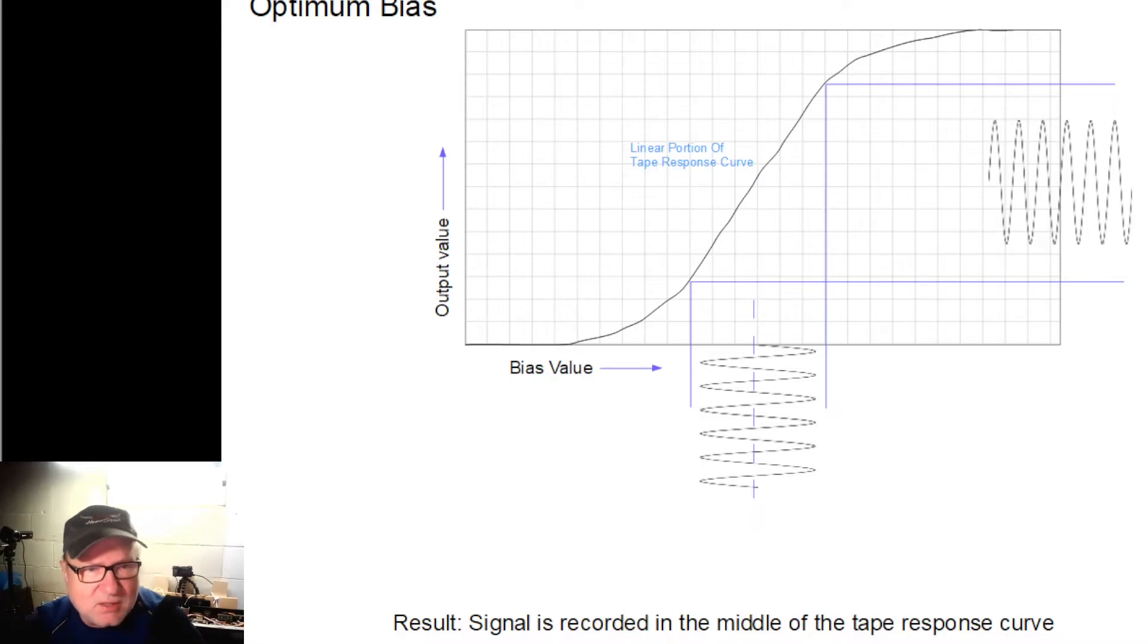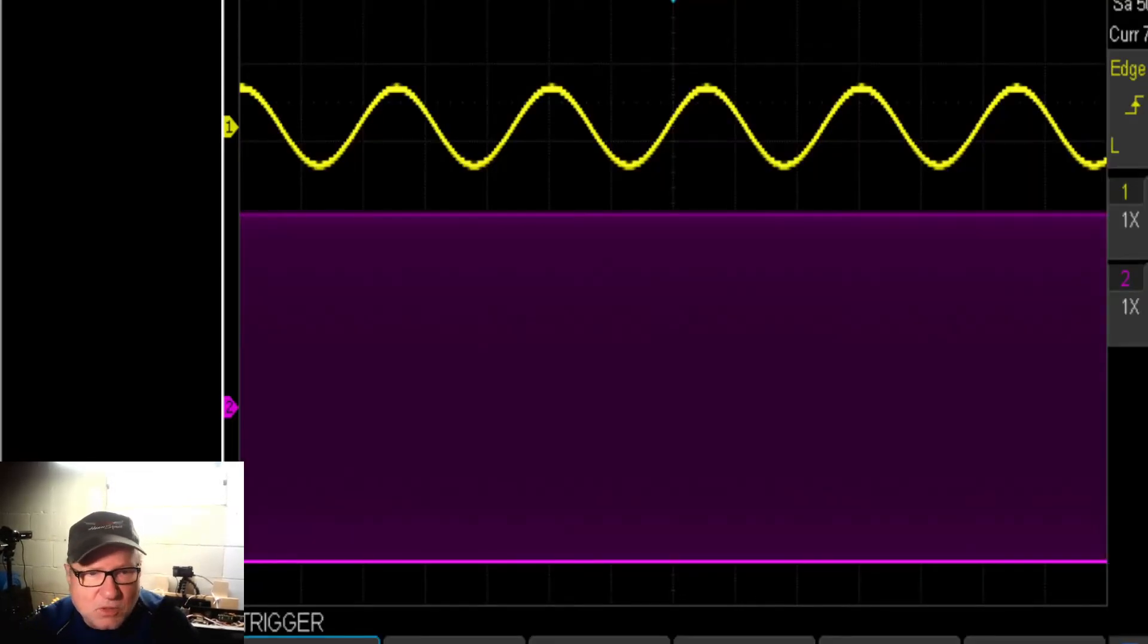So what does the signal actually look like? This is what the two signals will look like. If you're recording a calibration tape and you have a 400 Hz tone coming into your tape deck, this yellow line is the 400 Hz tone. And then this purple part is the 100 kHz bias signal.